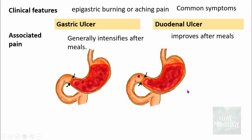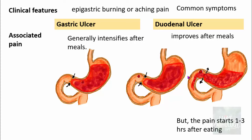In duodenal ulcer, because food is contained within the stomach due to pyloric constriction, no acid is released into the duodenum immediately after eating, so pain improves. However, one to three hours later, the pyloric sphincter relaxes, food passes from the stomach into the duodenum along with acid, causing pain to reappear. These patients often eat, sleep, and then wake up in the middle of the night with pain — very characteristic of duodenal ulcers.